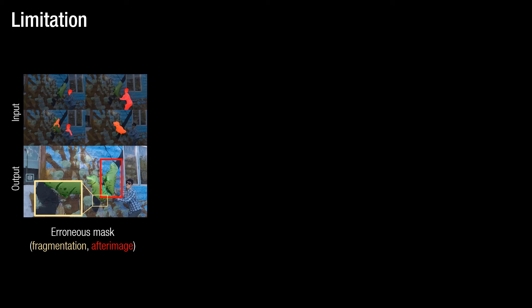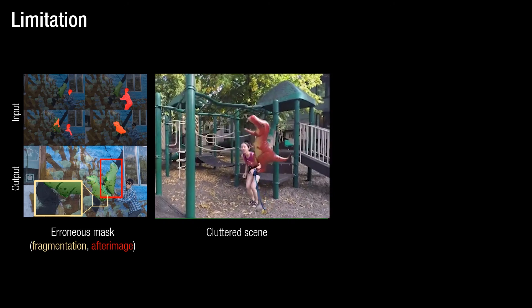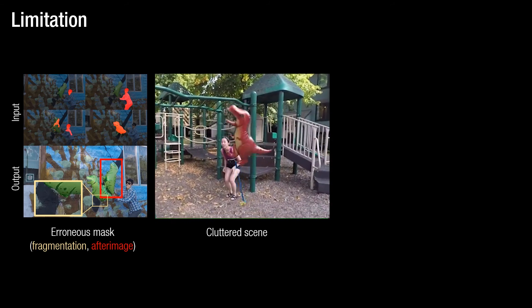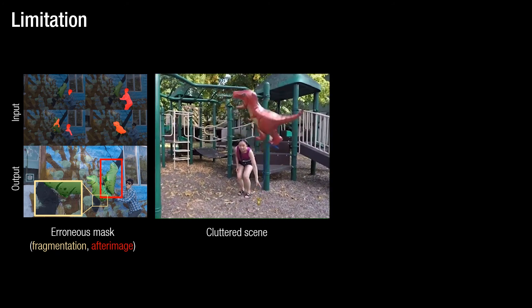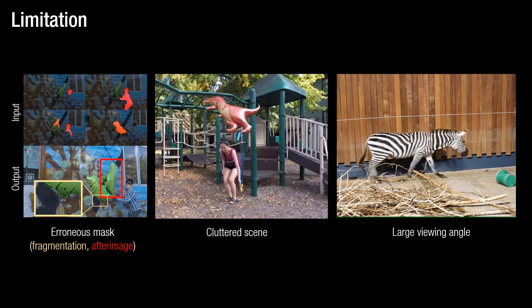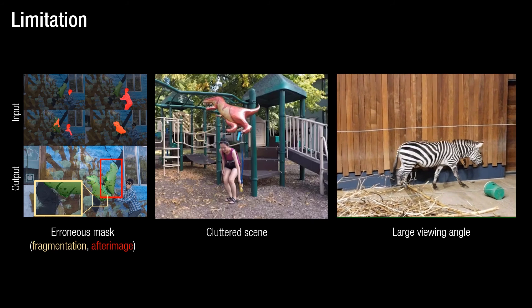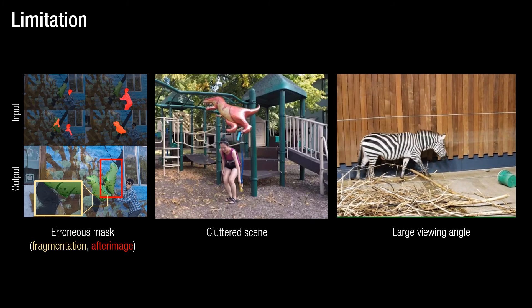Our method has a few limitations. If the foreground mask is not accurate, it produces significant artifacts such as object fragmentation and after-image effects. When the background scene is cluttered, our method can cause noisy warping results due to significant depth discontinuity from the clutter. Finally, our method does not perform well when the viewing angle between neighboring views is large, due to decreased overlap over the dynamic content.